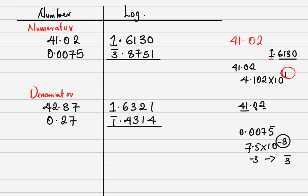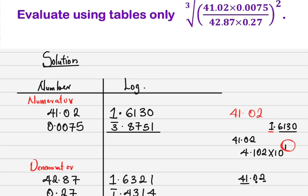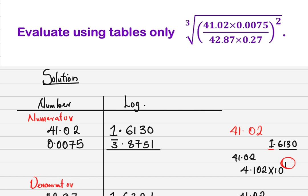Check 75 under 0 in the log table to get the mantissa 8751. Now, since the two numbers in the numerator are multiplying, the rule is: when two numbers multiply, their logs are added. Adding the logs: 8+6=14, write 4 carry 1; then 1+1=2, and 2 plus bar 3 (which is minus 3) gives minus 1, written as bar 1. So the log of the numerator product is bar 1.4881.